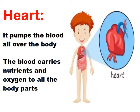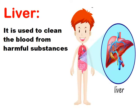Number two: the heart. The heart exists also in the chest area, just between the two lungs. The heart acts like a pump that pushes the blood all over the body. The blood carries important substances like nutrients and oxygen and sends them to all the body parts. Our body needs those nutrients to change them into the energy that we need.